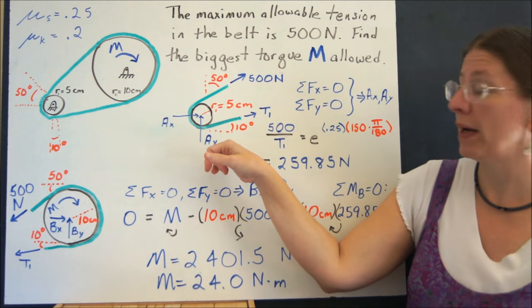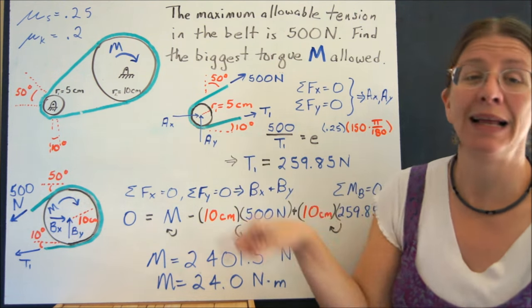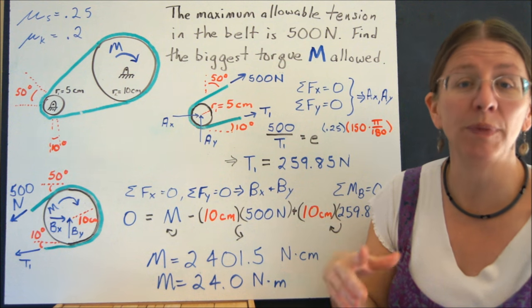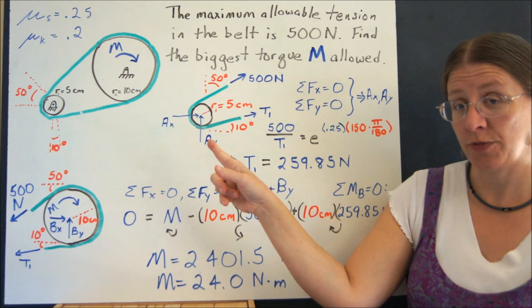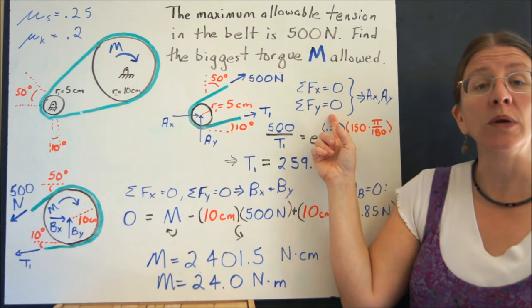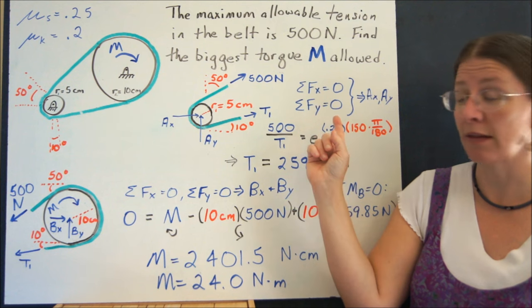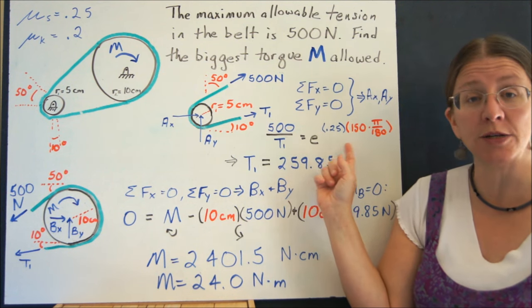Start with the free body diagram of just the smaller one. The smaller one is touching less, beta would be smaller, so that's where it's going to slip first. If I look at that, sum of the forces in X and Y would give me AX and AY, but I don't really care about those. What I really care about is what the ratio is between T2 and T1.